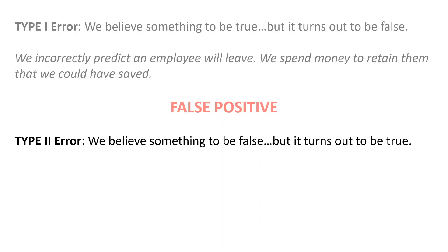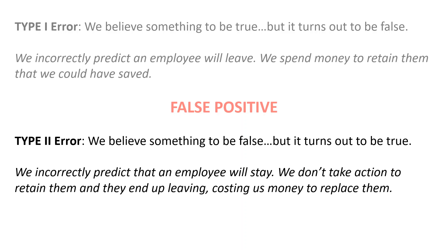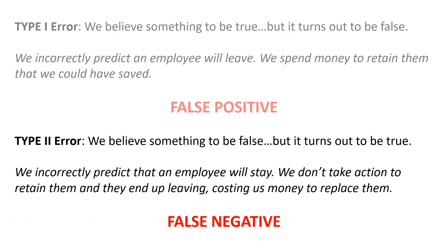A Type 2 error occurs when we believe something to be false but it turns out to be true. In our example, we commit a Type 2 error when we predict an employee will stay but they actually leave. This can have financial ramifications — if we could have retained the employee by taking action but didn't because our model misled us, we now pay the additional cost of replacing that individual. As everyone in HR knows, the cost of hiring can exceed an employee's salary, sometimes by a multiple of that salary. So a Type 2 error can potentially be very costly. This is also known as a false negative.